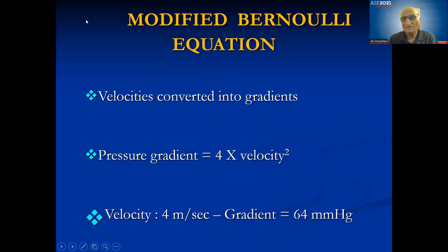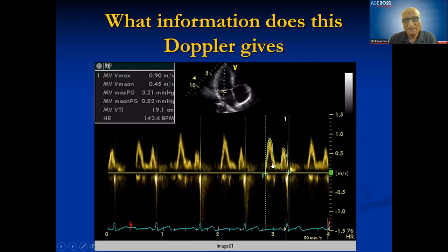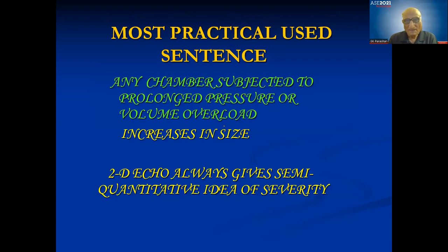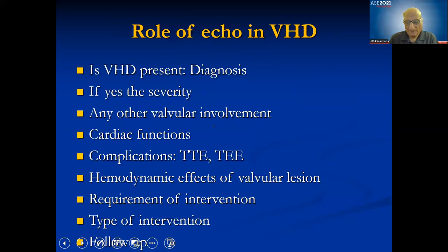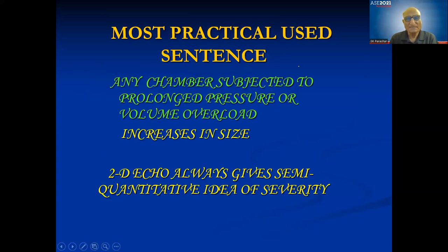Always be parallel to the flow because velocities give rise to hemodynamics and are converted into gradients — 4 times velocity squared gives the gradient. If your velocities are wrong, your gradients will be wrong. When you planimeter any Doppler you get a peak and mean gradient and a VTI. Remember: any chamber subjected to prolonged pressure or volume overload increases in size, and 2D echo always gives a semi-quantitative idea of severity.